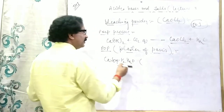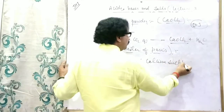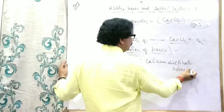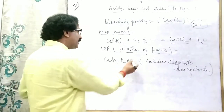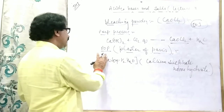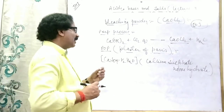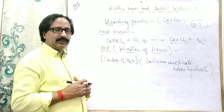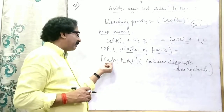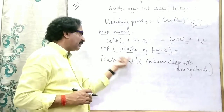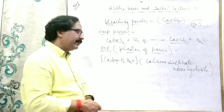Its chemical name is calcium sulfate hemihydrate. What do we mean by hemihydrate? The number of moles of water is half the number of moles of calcium sulfate. If calcium sulfate is two moles, then water will be one mole. If calcium sulfate is one, then water will be half. Whatever moles of calcium sulfate there are, moles of water will be half of that. That is known as POP — calcium sulfate hemihydrate.